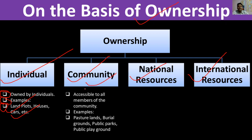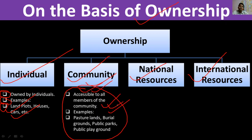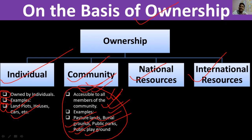Community resources are those used by a group of people, like a village community. Examples include burial grounds, pasture lands, public parks, and public playgrounds. Everyone in the village or town can use them — for morning walks, evening walks, or for children to play. No single individual owns them; everyone in the community can utilize them.